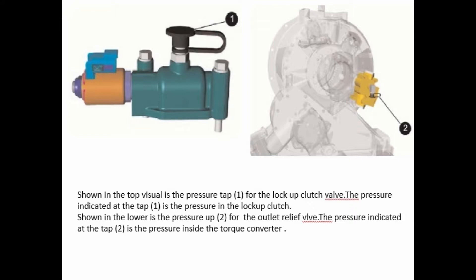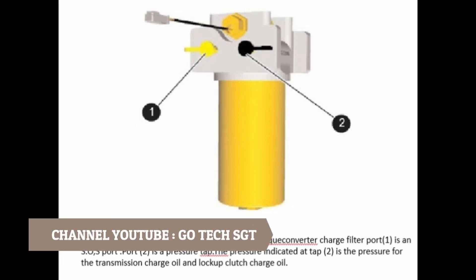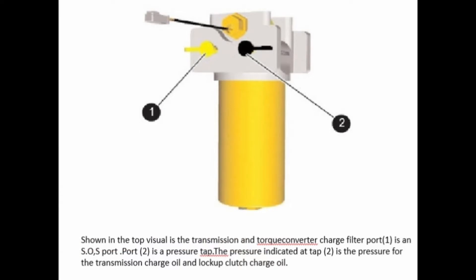In the lower is the pressure tap 1, and tap 2 is for the outlet relief valve. The pressure indicated at tap 2 is the pressure inside the torque converter. Shown in the top visual is the transmission and torque converter charge filter port. Tap 1 is an SOS port, and tap 2 is a pressure tap. The pressure indicated at tap 2 is the pressure for the transmission charge oil and lock-up clutch charge.